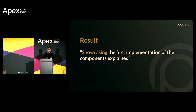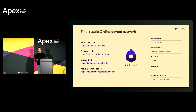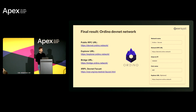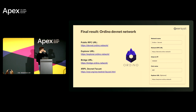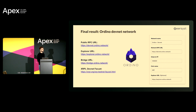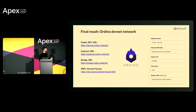Going to the results, we are showcasing the first implementation of the components explained. I'm happy to announce our Geno DevNet network — we have already launched a live network. I encourage you to use it, test it, send transactions, and even try to hack it. Here are all the URLs: the RPC for connecting to MetaMask, the Explorer URL for tracking all transactions, the bridge we'll be showcasing live, and the DevNet faucet. This sidechain is connected via a bridge from XRPL DevNet to Ordino DevNet, which is the EVM sidechain. On the right you have the MetaMask connection details.